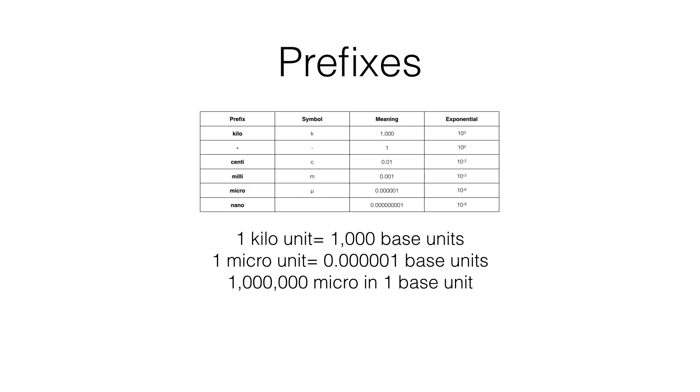Instead of writing out kilogram, millisecond, nanogram, or any other number of possible combinations, there are abbreviations. These can be abbreviated using the symbol for the prefix and the base unit, like we see here. And here are a few other examples.